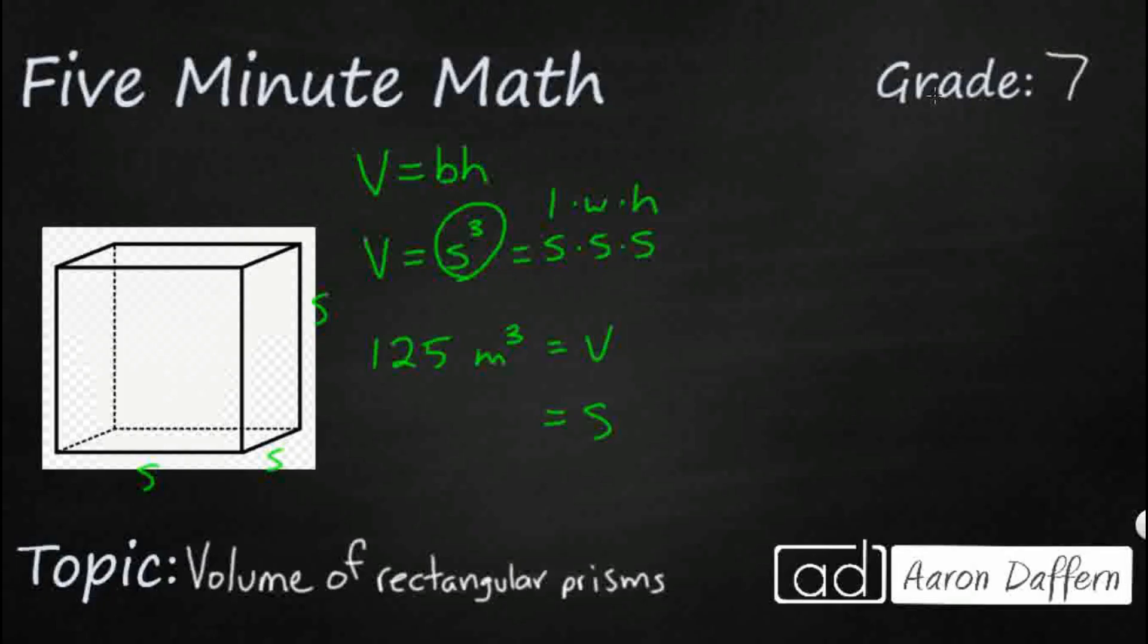So we need to know what number times itself, so I'm going to call this X, since we've already got the S using there. So what number times itself three times is going to make 125. So let's say 125 equals our mystery number here. And this is going to involve a little bit of guess and check, unless we really know about cube roots here.